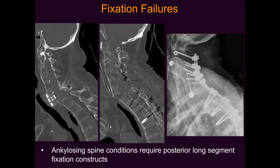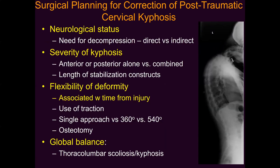Even short-segment anterior-posterior fixation, as was done in this patient with ankylosing spondylitis, is probably insufficient in a patient who has an ankylosed spine with long lever arms and poor bone quality. This patient went on to fail and require a more favorable approach — multi-level posterior segmental fixation.